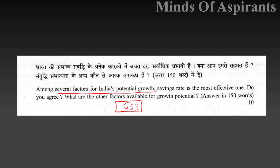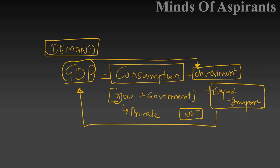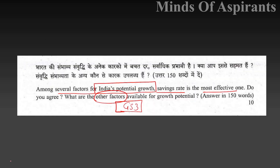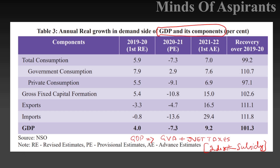This is how you should study for GS Paper 3. Consider this question: 'Among the several factors for India's growth, savings rate and investment is the most effective — do you agree? What are the other factors?' I listed the factors: consumption by you, consumption by the government, exports, imports, and investment — each contributes to GDP.